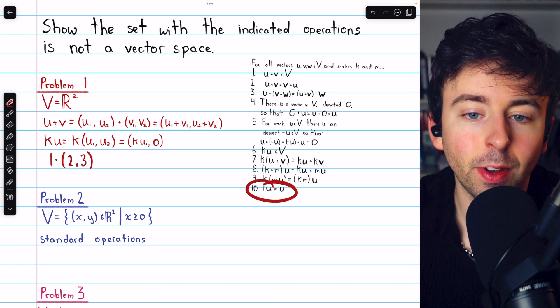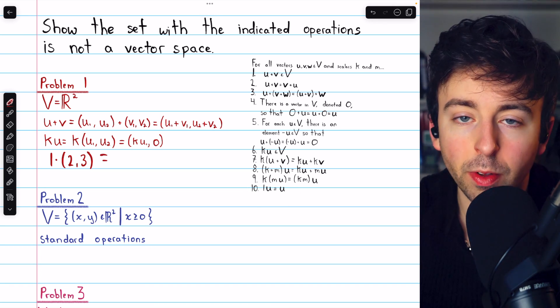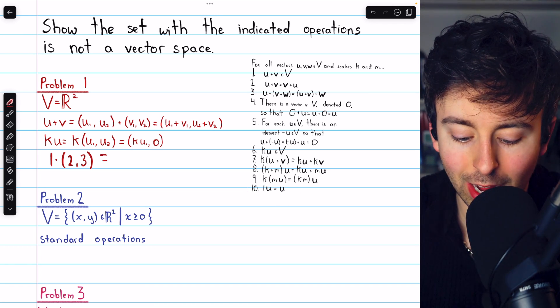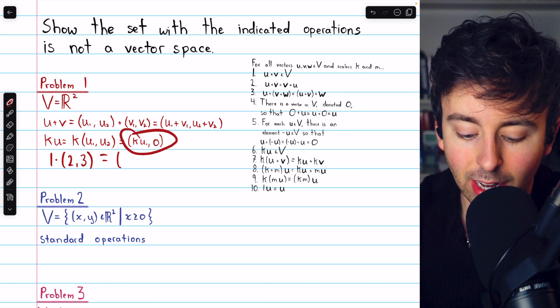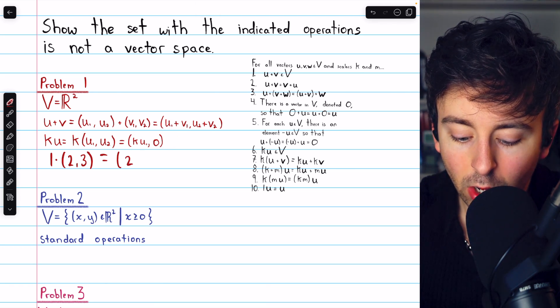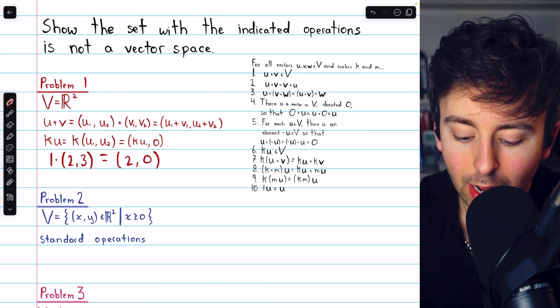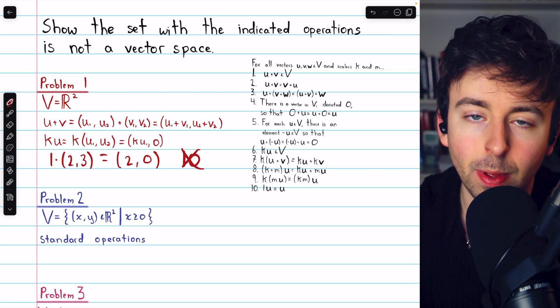If we take one and multiply it by the vector (2, 3), for example, for this axiom to be satisfied, this must produce the vector (2, 3). It must be unchanged. However, based on this definition of scalar multiplication, we get the vector (2, 0). And so axiom ten has been violated.